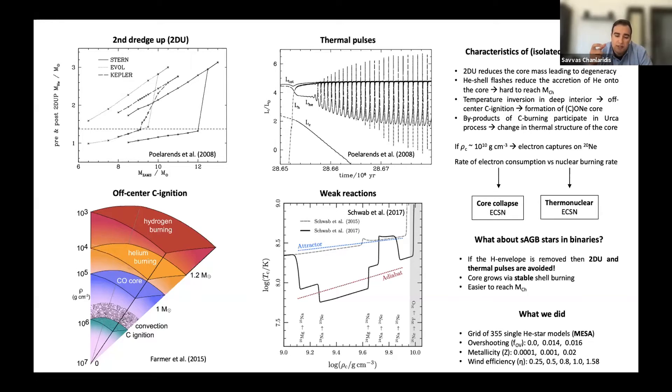An interesting twist is what would happen if such a star was part of a binary system. And in that case, binary interactions could strip the hydrogen envelope of the super-AGB star and both the secondary red giant branch and the thermal pulses can be completely avoided. So in principle, this would allow the core to grow easier and reach the Chandrasekhar mass limit solely via stable shell burning.